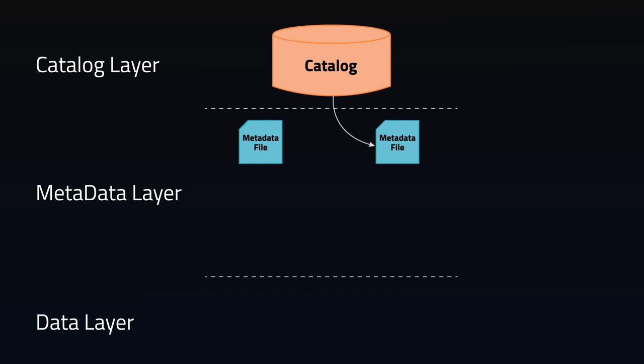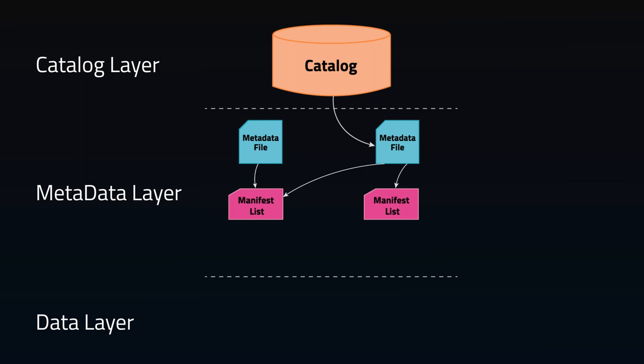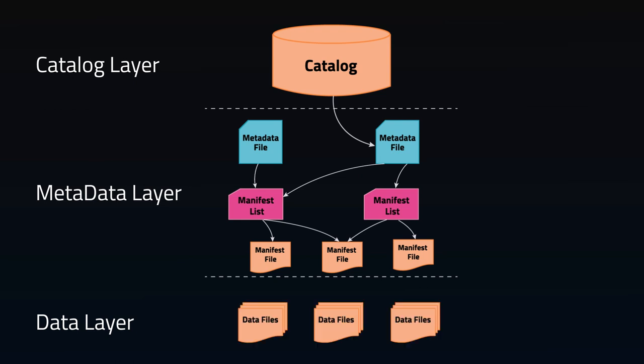Then there's the metadata layer. Metadata files store metadata about a table, including information about the table's schema, partition information, snapshots, and which snapshot is the current state. The manifest list is a list of manifest files, and it contains information about each manifest file that makes up a snapshot, such as the location of the manifest file, what snapshot it was added as part of, information about the partitions it belongs to, and the lower and upper bounds for partition columns for the data files it tracks. Each manifest file keeps track of a subset of the data files for parallelism and reuse efficiently at scale, containing details about partition membership, record count, and lower and upper bounds of columns.